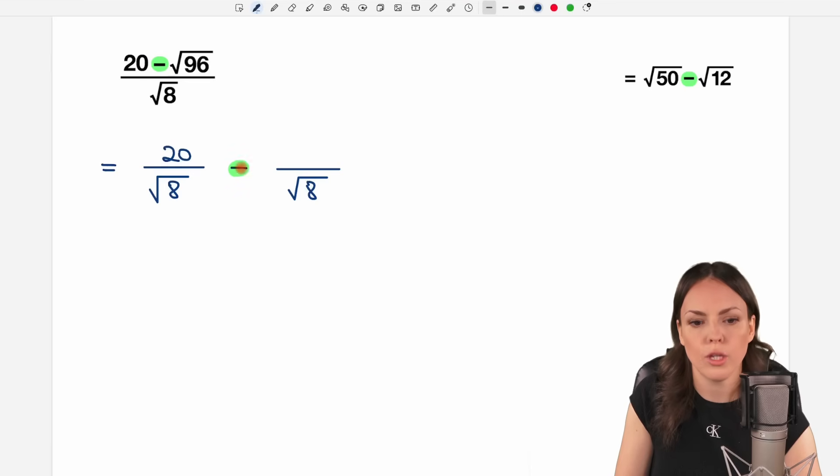the 20, then we have our minus, and for the second numerator we take the second part of this difference, the square root of 96.